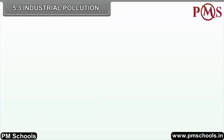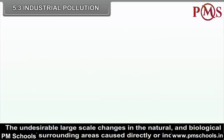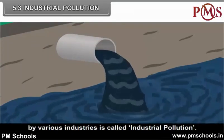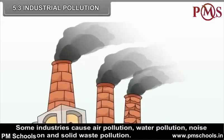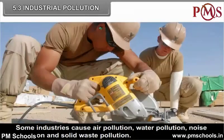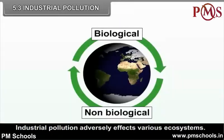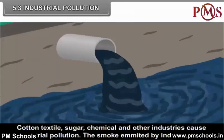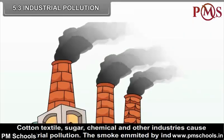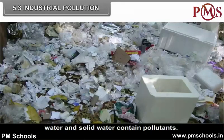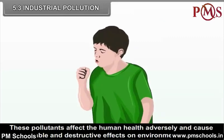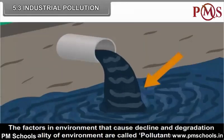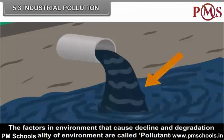The undesirable large-scale changes in the natural and biological factors of the surrounding areas caused directly or indirectly by various industries is called industrial pollution. Some industries cause air pollution, water pollution, noise pollution and solid waste pollution. Industrial pollution adversely affects various ecosystems. Cotton textile, sugar, chemical and other industries cause industrial pollution. The smoke emitted by industries, water and solid waste contain pollutants that affect human health adversely and cause undesirable and destructive effects on the environment. Factors that cause decline and degradation of the quality of environment are called pollutants.